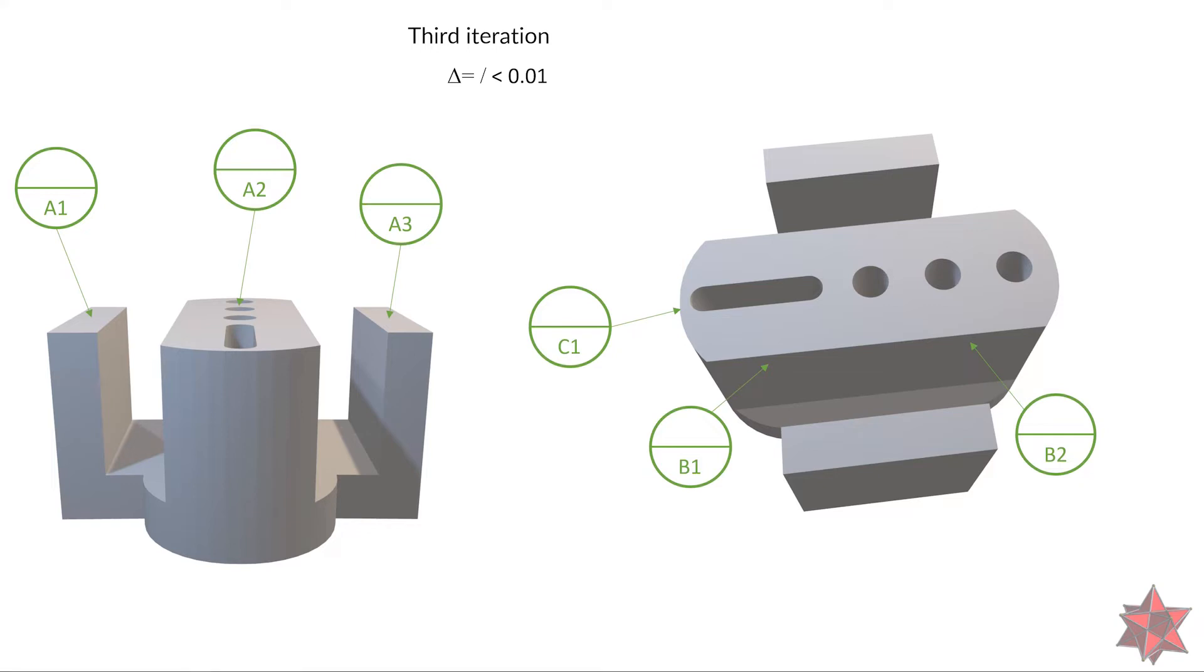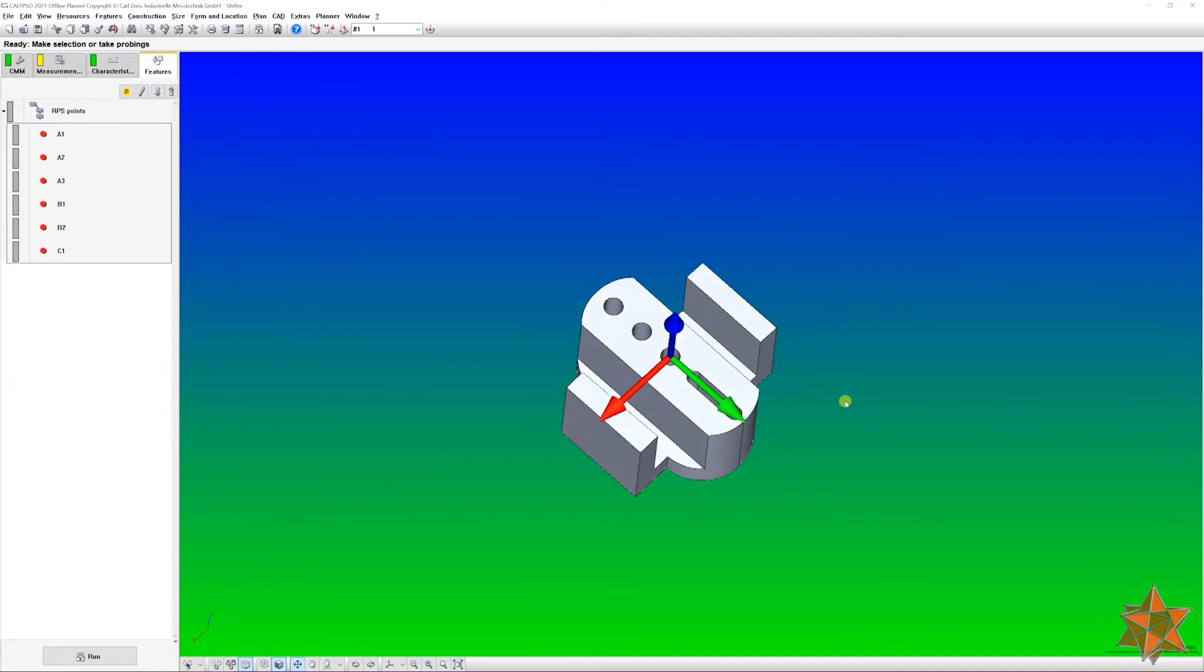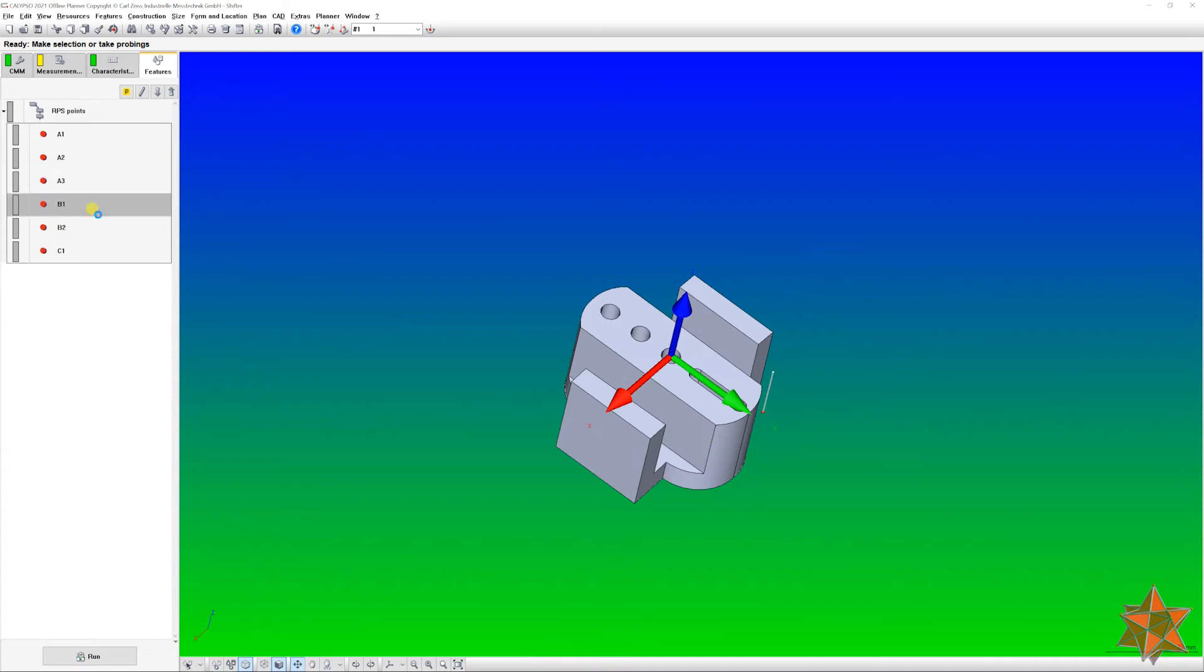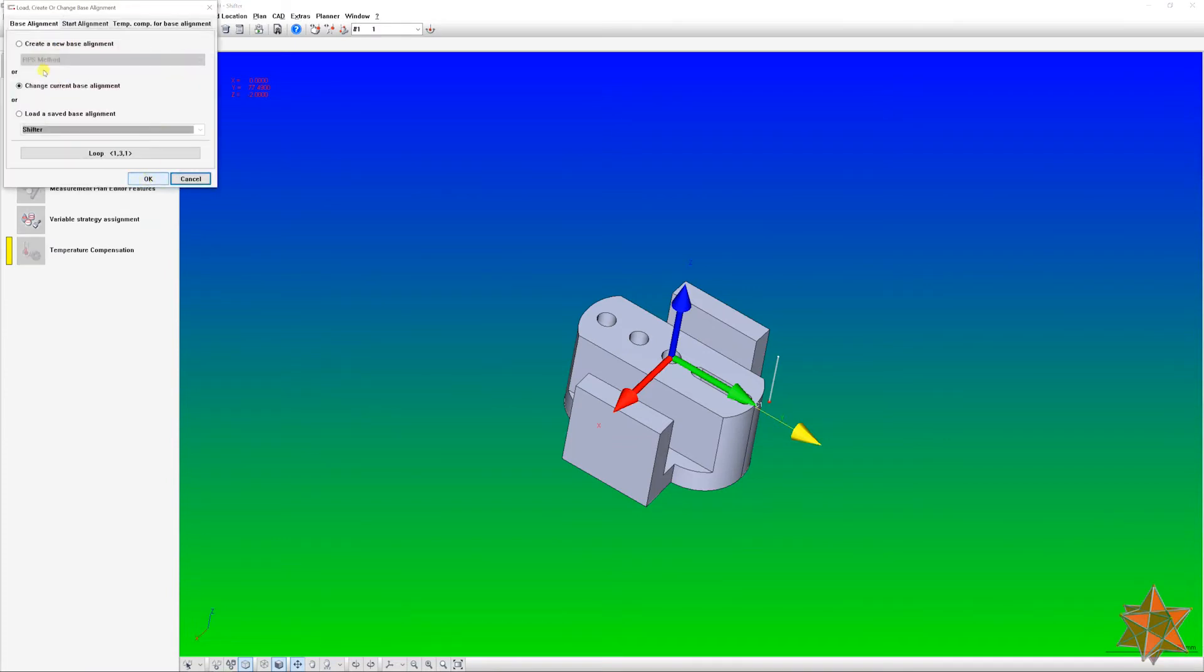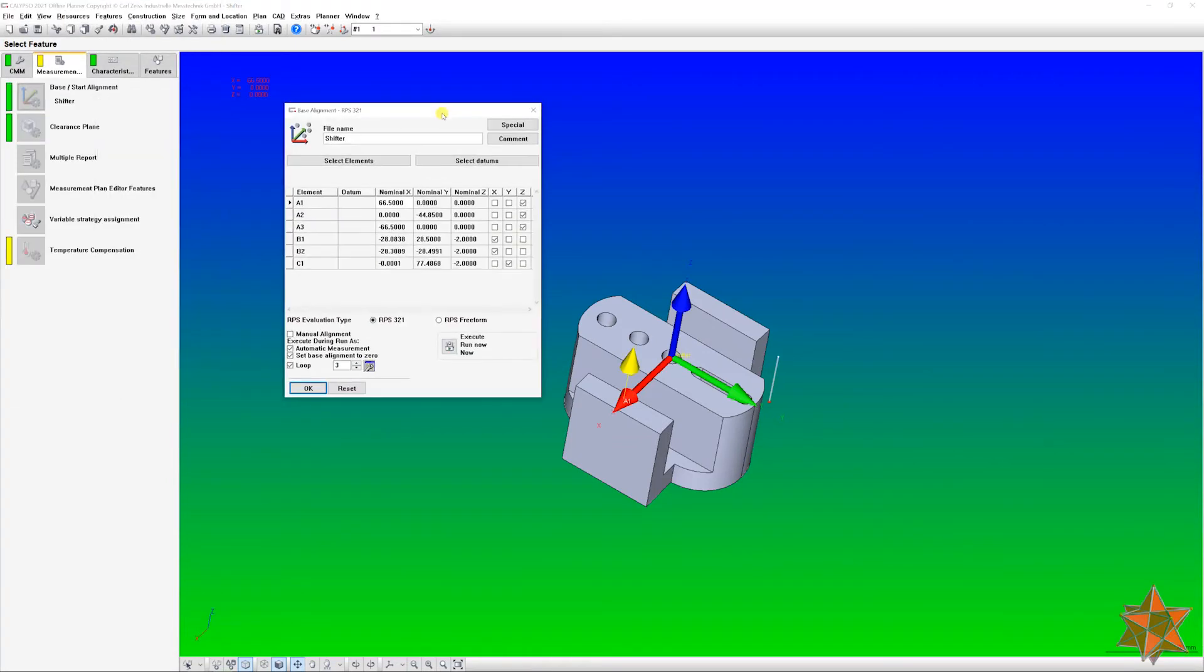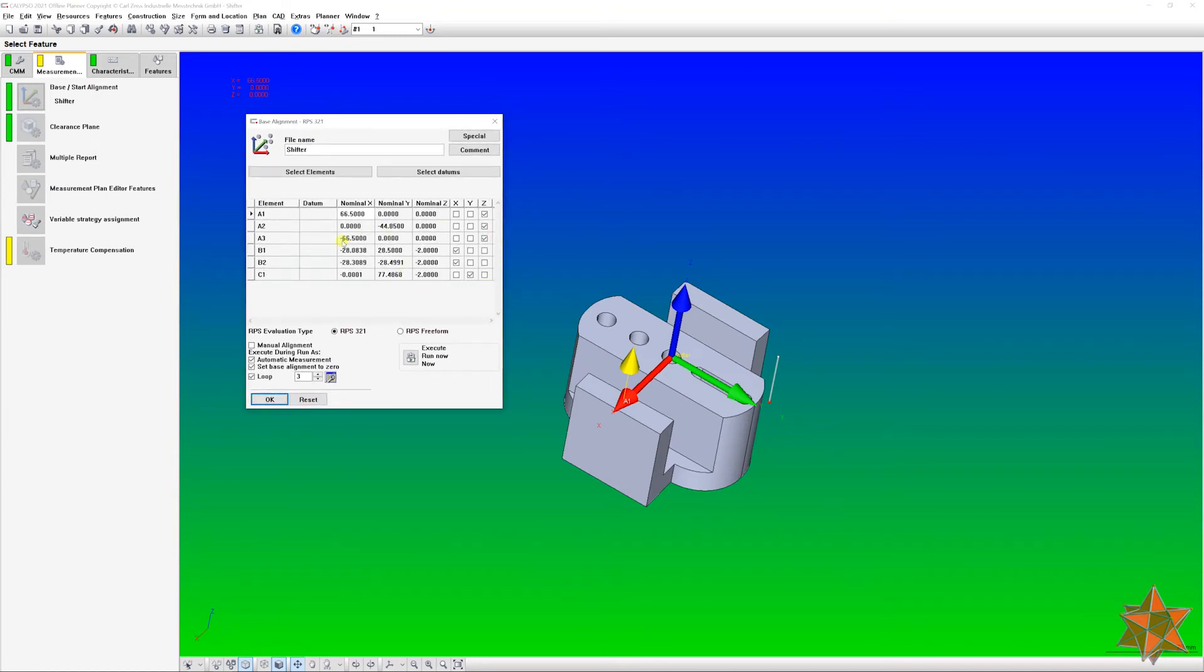This means that the software has calculated the position of the part in the volume of the measurement from the machine. It has calculated the inclinations of the part and everything it needs to in order to measure correctly the elements that you choose from the part. Now let's simulate this on Calypso and see what happens. Okay, so we are here in Calypso and we've extracted the points that we need to do the alignment, and we have done the alignment in RPS method.